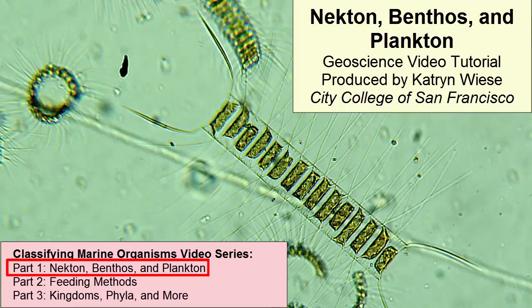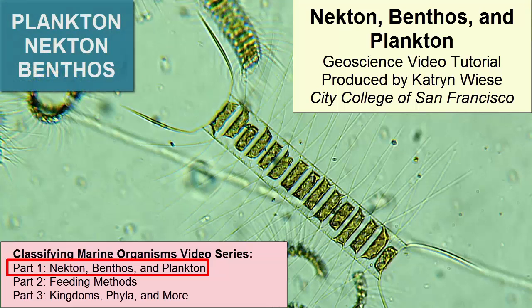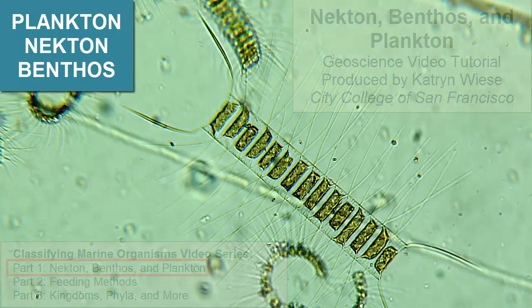Marine organisms can be classified by many characteristics, including how they feed, where they live, and their genetic traits. We'll begin by reviewing how marine organisms are classified by location, either as plankton, nekton, or benthos.